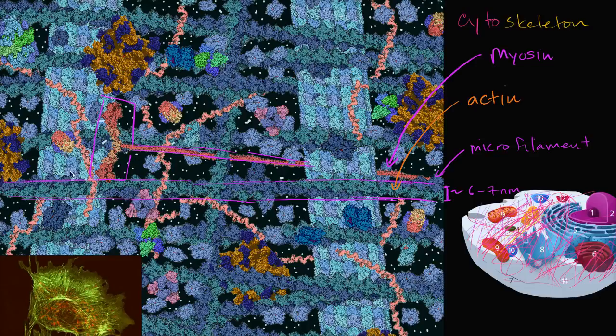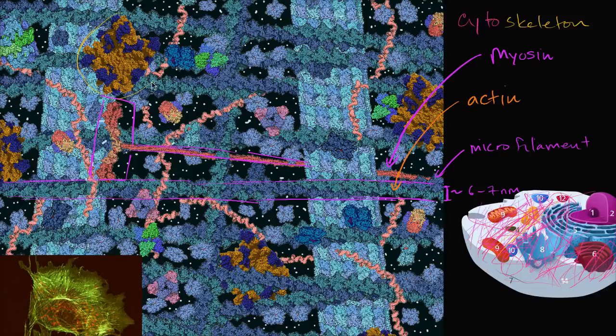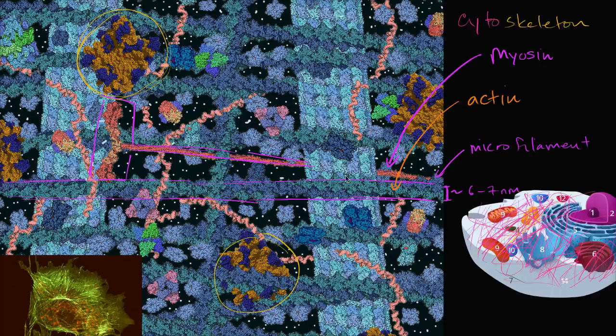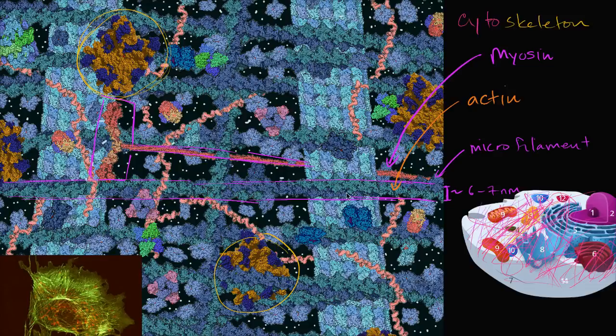So that's myosin right over there. We see ribosomes. These ribosomes are the ribosomes that are not attached to the endoplasmic reticulum. So these are free ribosomes around here. So you can see it's incredibly, incredibly complex. You might say, okay, I see these microfilaments made up of actin.